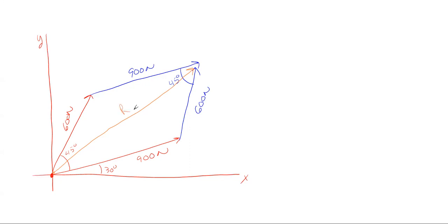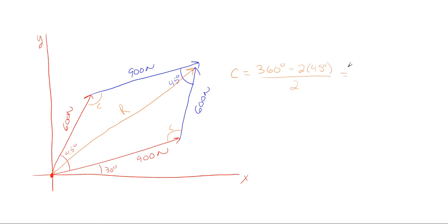So how do we solve for that resultant force? In order to solve for it, we have to know what these opposite angles are — we'll label them little c for now. To solve for those, we have to understand that there's a total of 360 degrees in this parallelogram, as in all four-sided shapes. We know that two of the angles are 45 degrees each, and since it's a parallelogram these two sides are equal in value. So one of those c angles equals 360 degrees minus the two 45-degree angles, divided by two — giving us 135 degrees each.